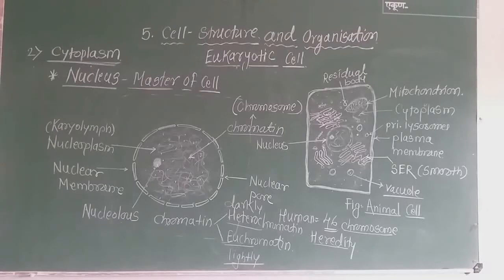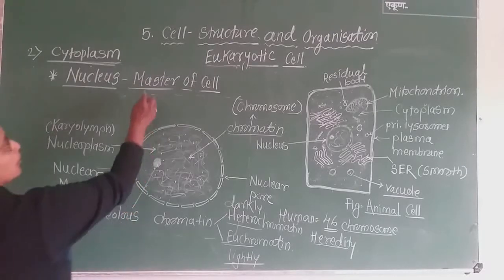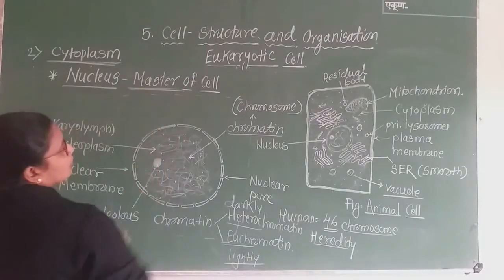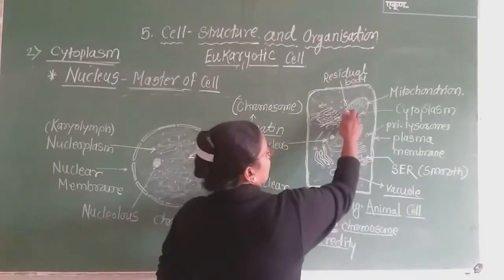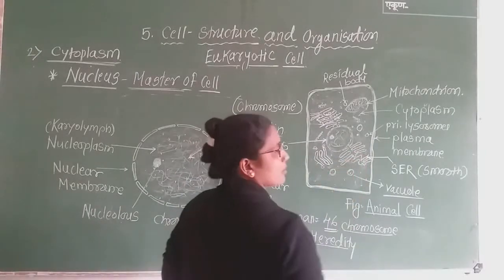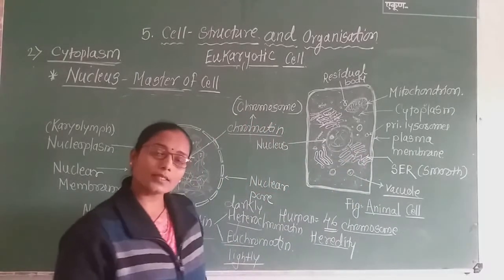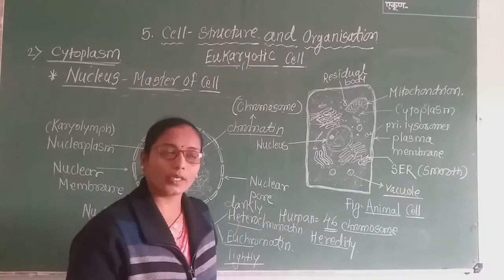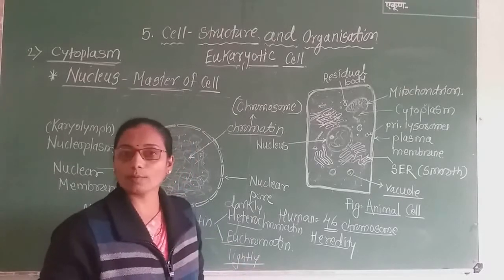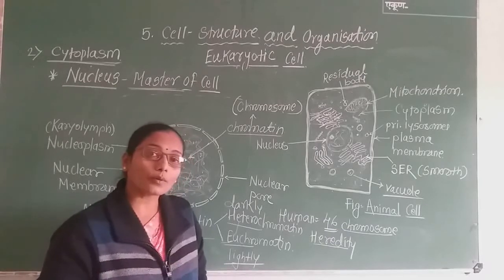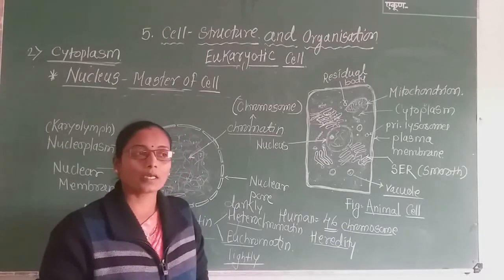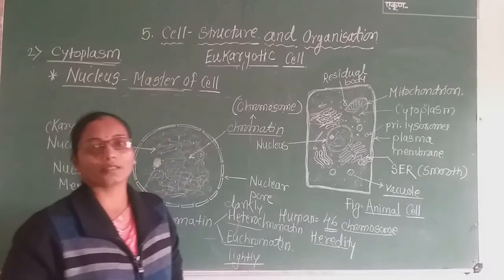In the case of the nucleus, it consists of genetic material and is called the master of the cell. The nucleus controls the activity of each and every organelle in the cell. Hence it is also called the controller of the cell, meaning it can control all metabolic activity.